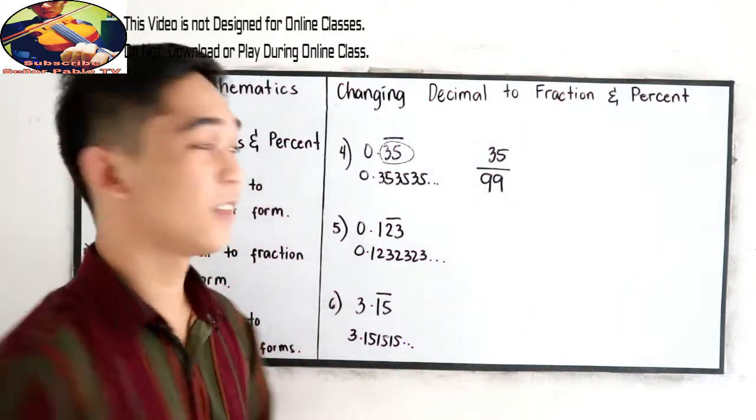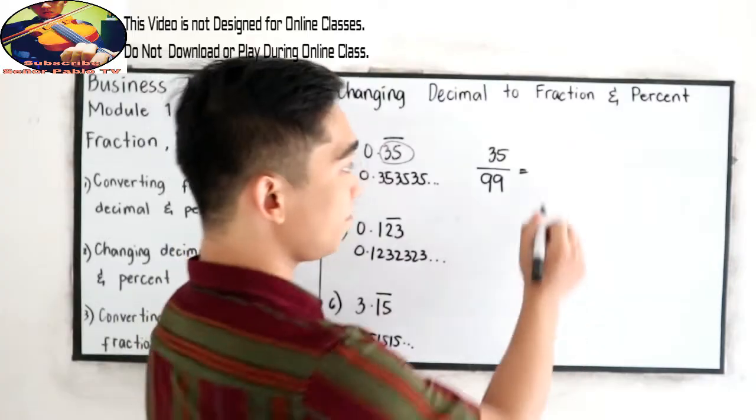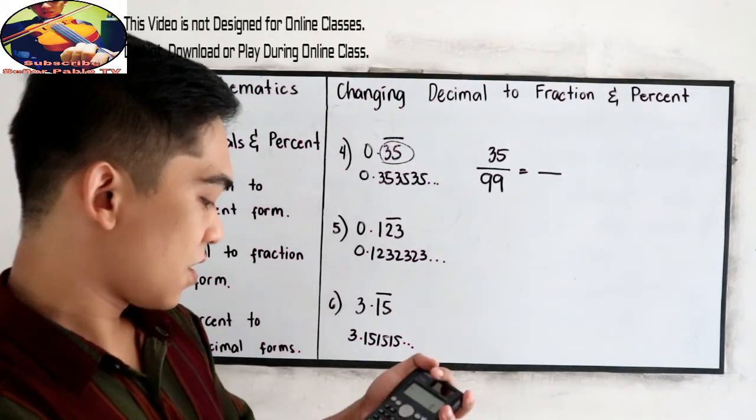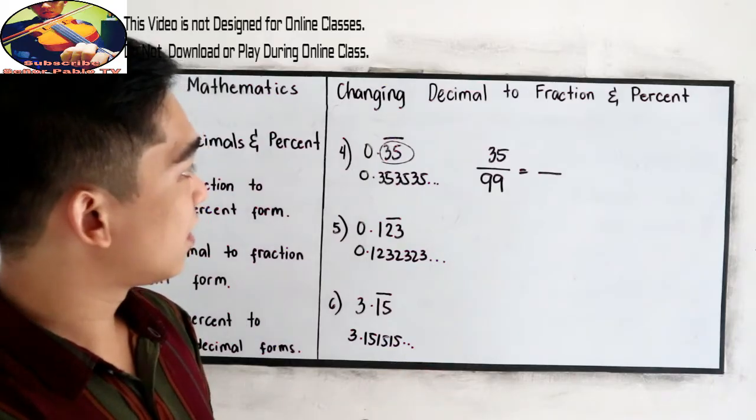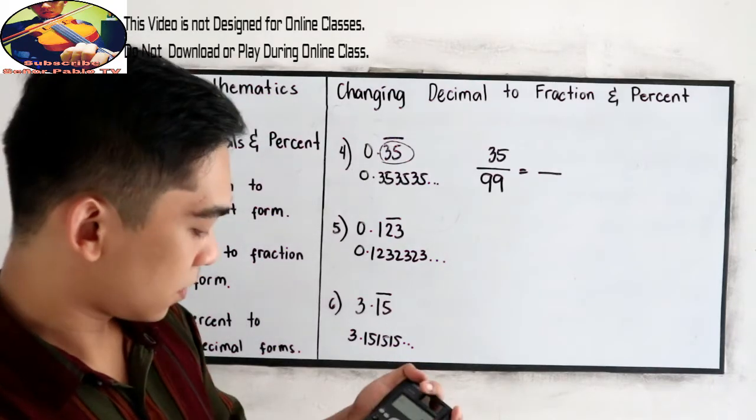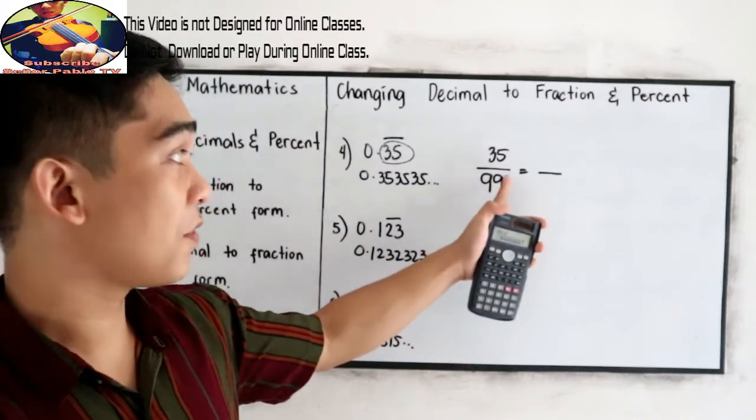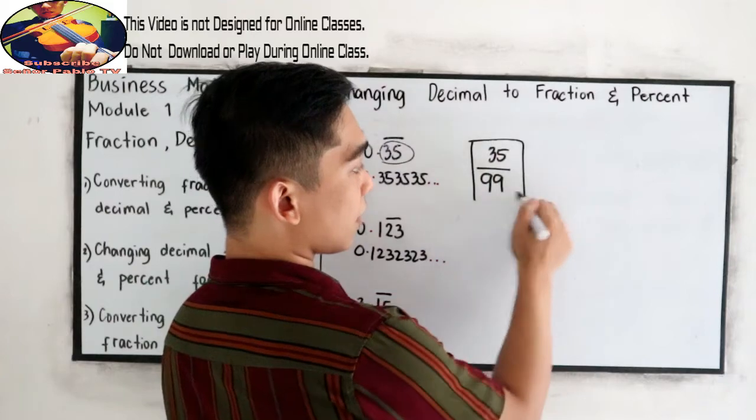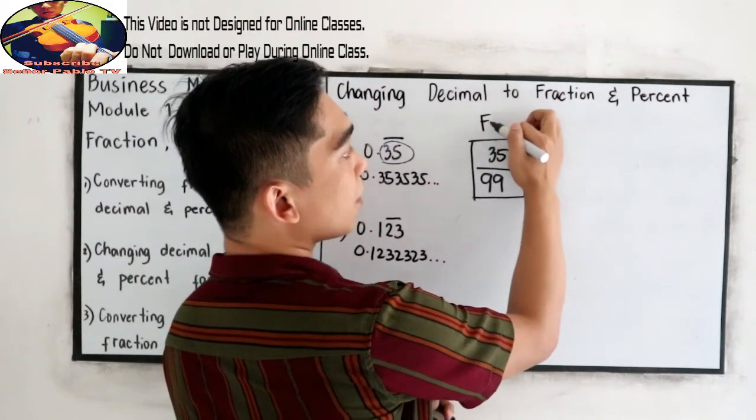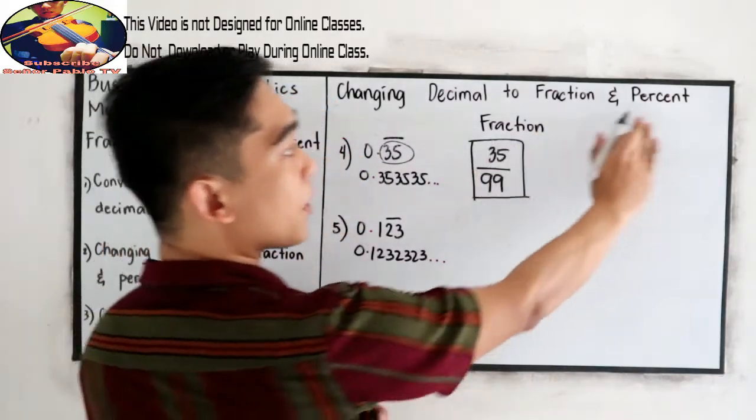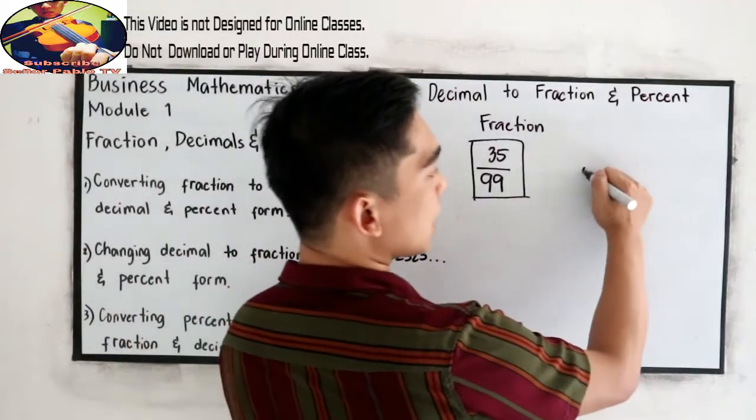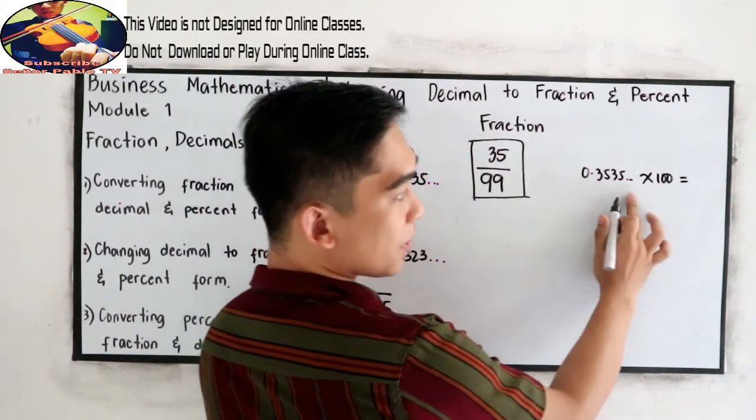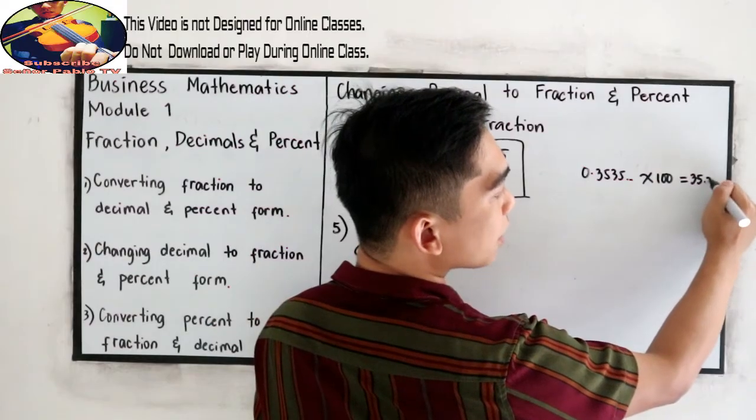That's it. Just reduce in lowest term. Divisible by 3? 3, 6, no, it's not divisible by 3. So not divisible by 3, or any number, so this will be our fraction form. And our percent form, so since this is 0.3535 and so on, let's multiply to 100. So this will become 35.35 for example.